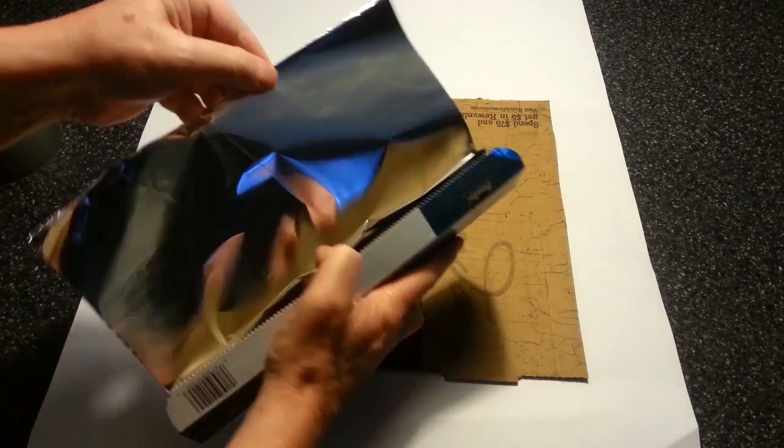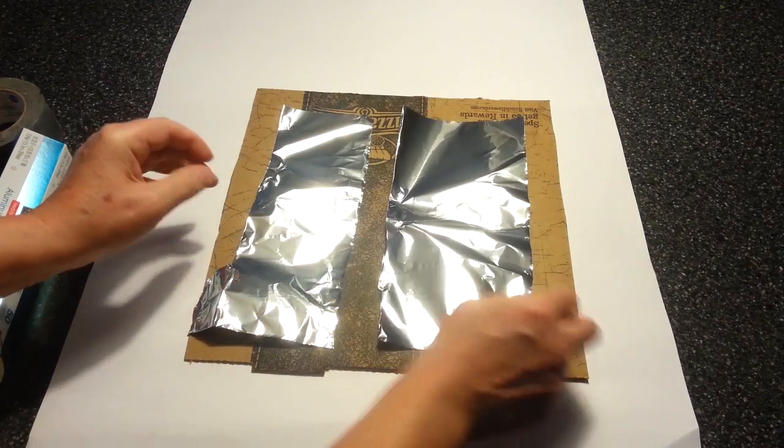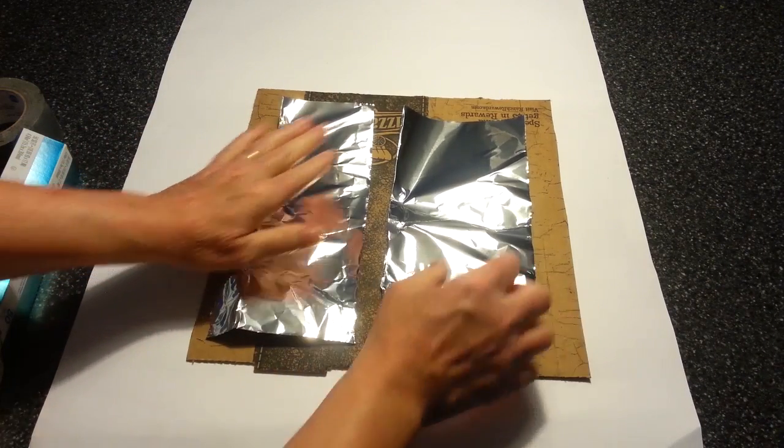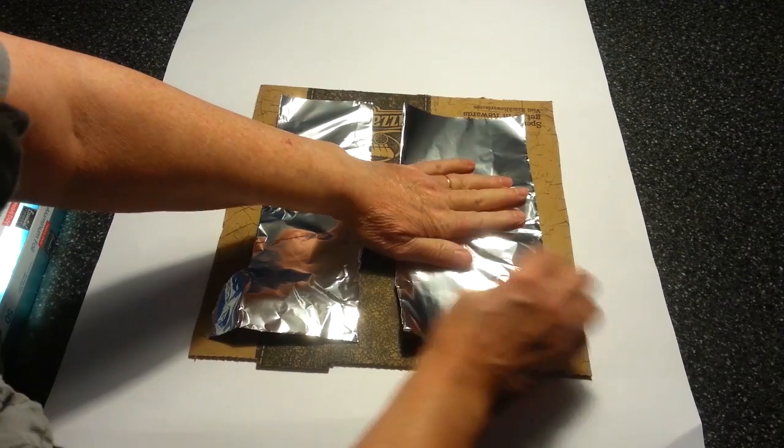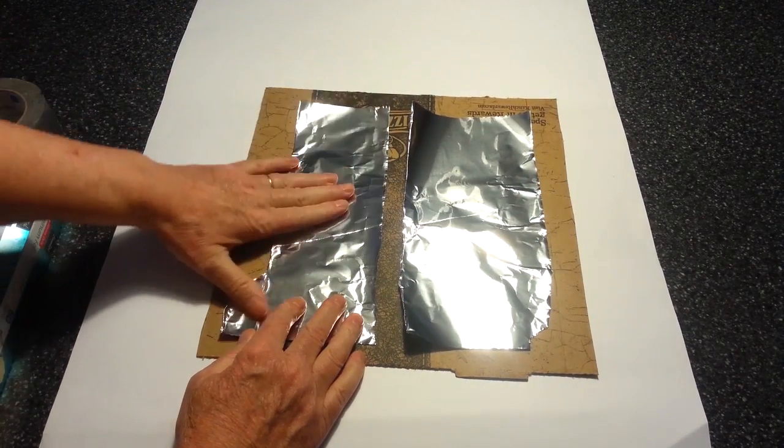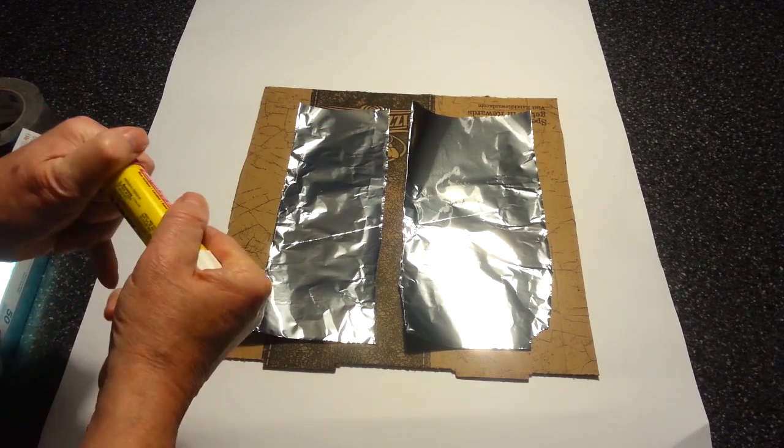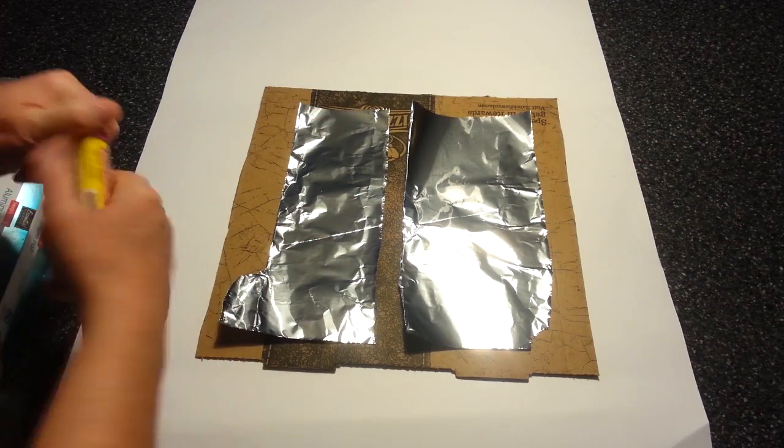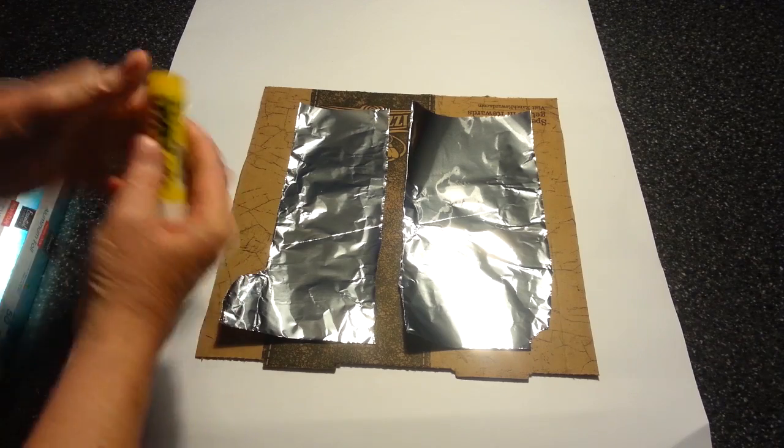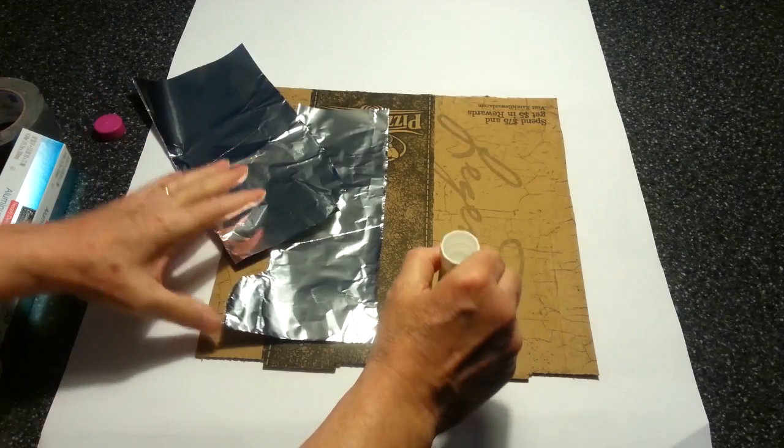Tear off two sheets of foil approximately six inches wide. Use the glue stick to apply some glue to the cardboard and lay one of the sheets on the glue. Make sure you leave a couple of inches of space between the bottom of the aluminum sheet and the bottom of the cardboard.